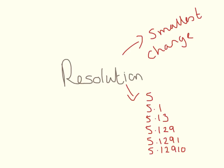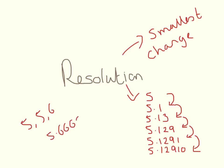And then finally, resolution. This is the smallest change that you can measure. Here we are increasing our resolution until we can't measure changes anymore. When you are writing numbers for your average — do not write an average with a load of decimal places after it, because you cannot be sure to that resolution if you only measured to whole numbers.